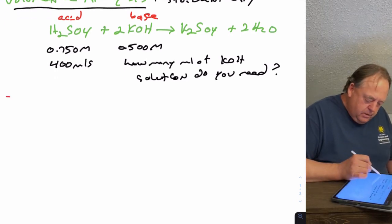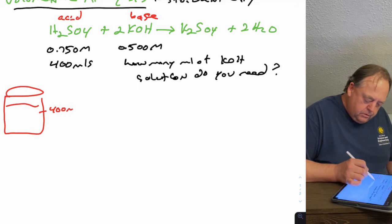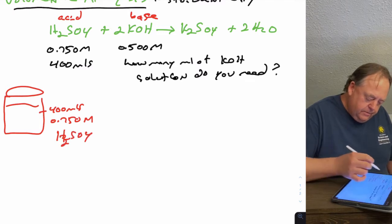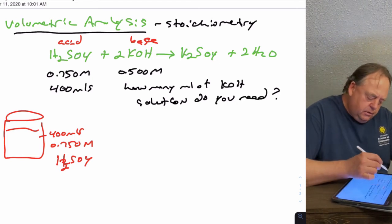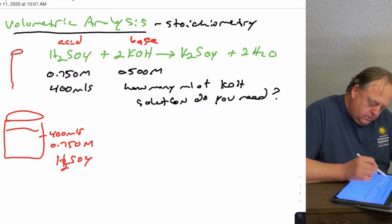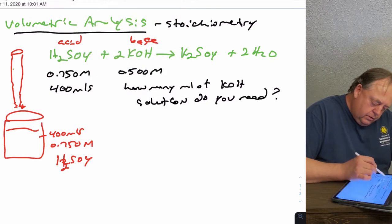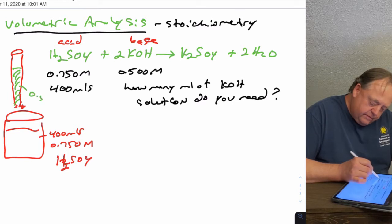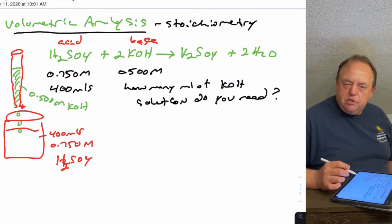If you're doing this reaction in lab, it might look something like this: maybe you have a beaker of the acid in it, so you've got 400 mils of 0.75 molar sulfuric acid. In chemistry labs, you often do what's called titration, so then you would have a burette full of your KOH solution - 0.500 molar KOH - and then you would add that dropwise into your H2SO4 solution.